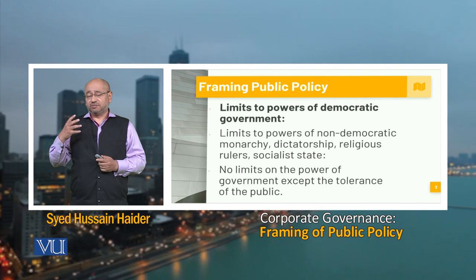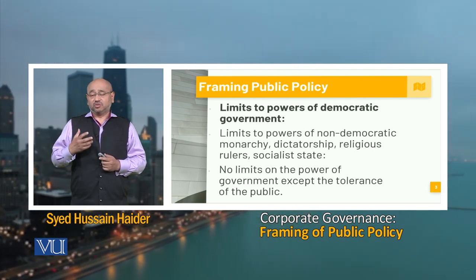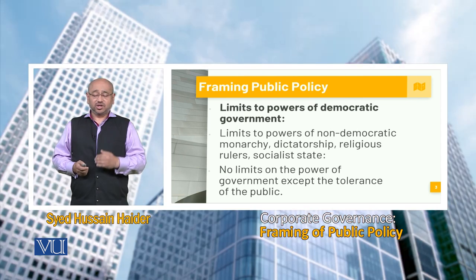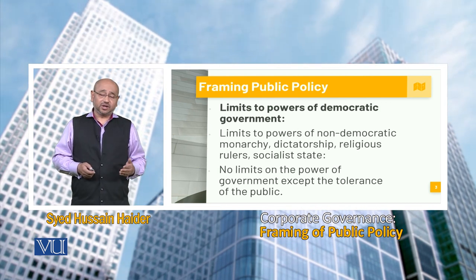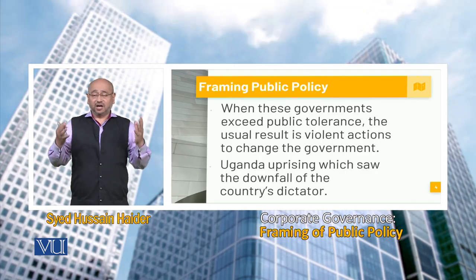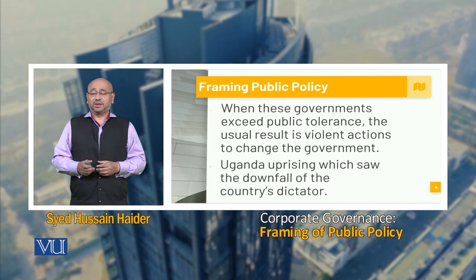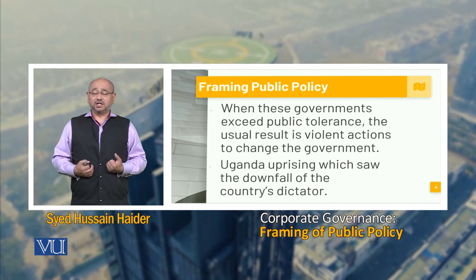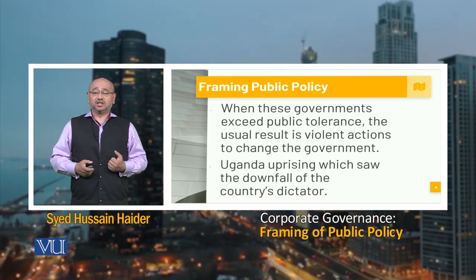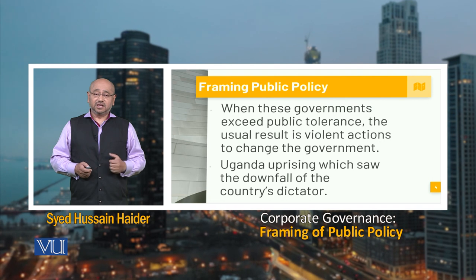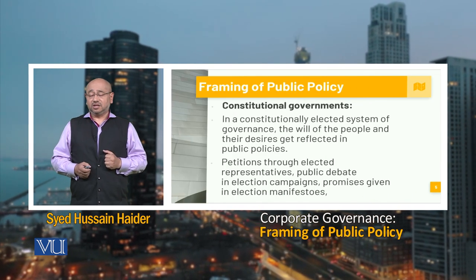In democracies, it is by the people and for the people. The people tend to determine how the nation has to move forward, along with different stakeholders and political actors either in the government or in the opposition. When these governments exceed public tolerance, the usual result is violent actions to change the government. We saw it in Uganda, and in the different spring revolutions taking place from Syria, moving on to Lebanon and down towards Yemen. Even in Pakistan, sometimes the public becomes volatile and rises against different stakeholders because they feel something is not right — testing the limits of public tolerance.